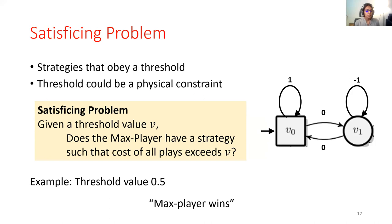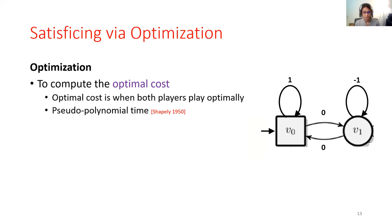The first observation we have is that satisficing can be solved via optimization. Optimization is one of the most fundamental problems on quantitative games. It is to compute the optimal cost, which is the cost gained when both of the players are playing their best strategy. Optimization is known to be decidable. It is pseudo-polynomial time, so hence fairly efficient.